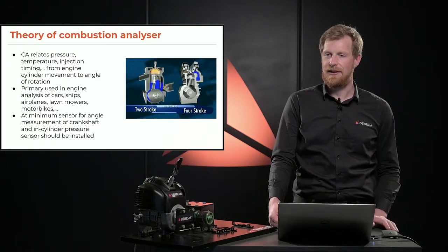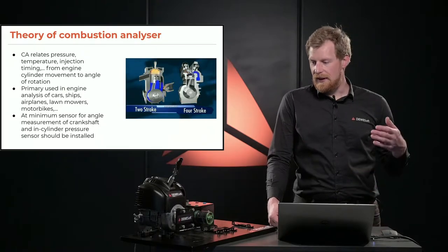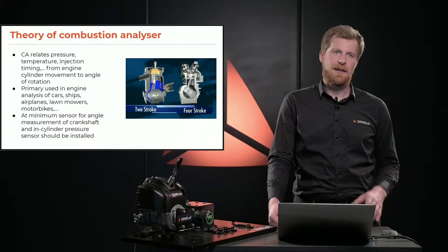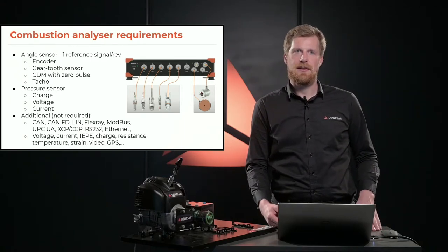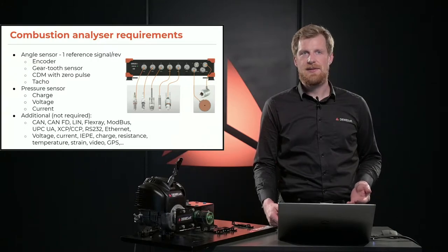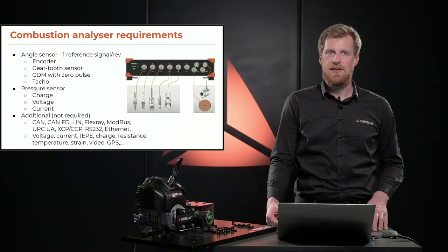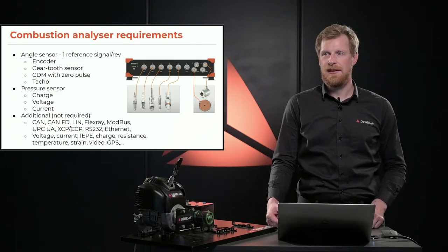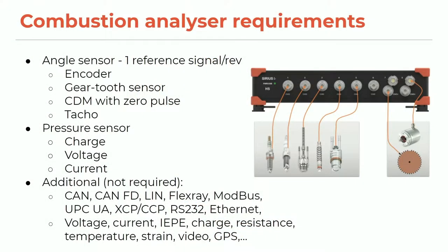Rotary engines and turbine engines are not supported with this combustion analyzer. What you need at minimum is one angle sensor and one in-cylinder pressure sensor. We support different types of angle sensors, from the most basic encoder that can be installed on the engine, to the already built-in gear tooth sensor with either double or missing teeth. Devasoft actually supports many different types of gear tooth sensors.